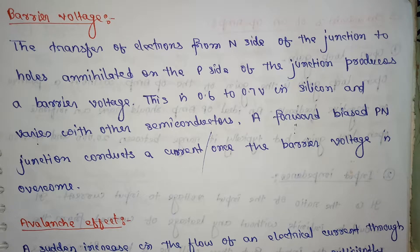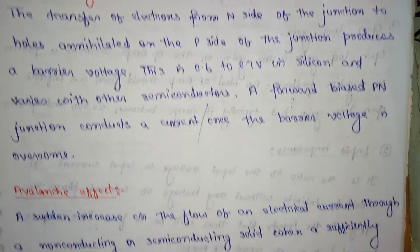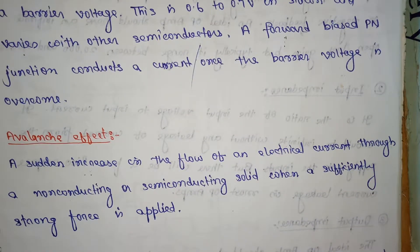A forward biased PN junction conducts a current once the barrier voltage is overcome. Next definition: what is avalanche effect? A sudden increase in the flow of an electrical current through a non-conducting or semiconducting solid when a sufficiently strong force is applied.